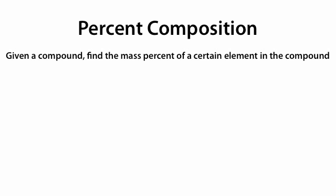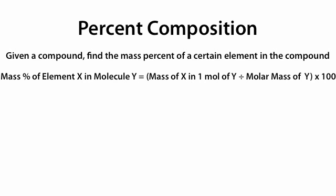We're going to talk about percent composition, which is: given a compound, find the mass percent of a certain element in the compound. The formula we use is: mass percent of element X in molecule Y equals the mass of element X in one mole of molecule Y, divided by the molar mass of molecule Y, all times 100.